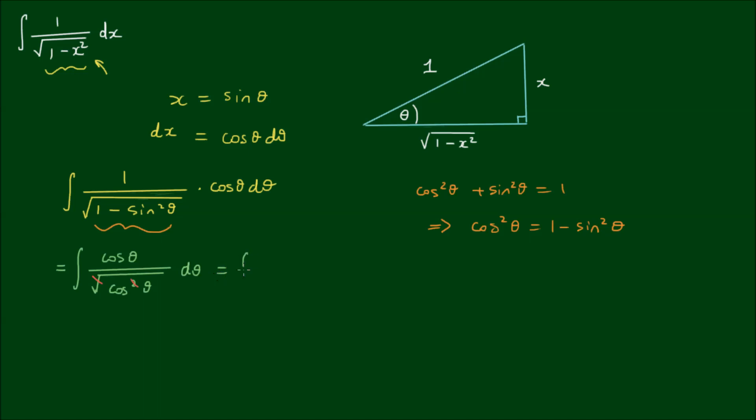And we're left with the integral of cos theta on cos theta d theta, which of course simplifies to just the integral of d theta, which then evaluates to simply theta plus the integration constant c.